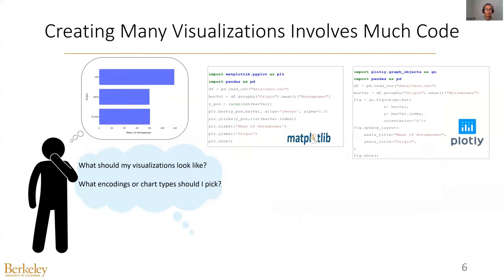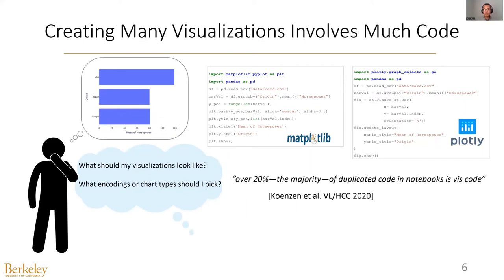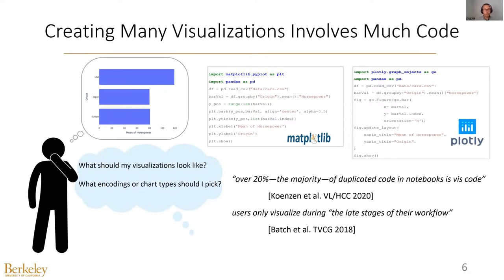They also need to consider questions like what encodings or chart types should I pick in order to highlight the trends or patterns in the data. Here I have shown two examples for plotting a simple bar chart, which requires multiple lines of code. In data exploration, we need to create multiple visualizations, which in turn require much coding work. In fact, a recent analysis of Jupyter Notebooks has shown that over 20% of the duplicated code is visualization code. Due to these barriers, many users only visualize their data during the late stages of their workflow rather than experiment throughout. This substantial programming overhead has significantly hindered data exploration, especially when users only have a vague idea about what they are looking for.